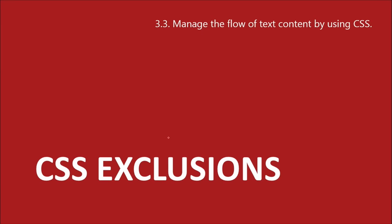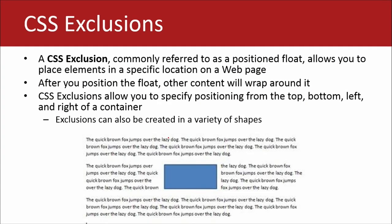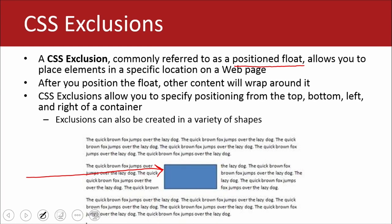Let's go back to our presentation and talk about CSS exclusions. I had a problem running the demo for this earlier, so we'll probably skip it in this presentation. But I'll point you to some really helpful information you can use to experiment with CSS exclusions. An exclusion is commonly referred to as a position float, and it allows you to place an element in a specific location on a web page.